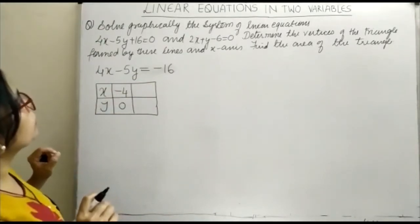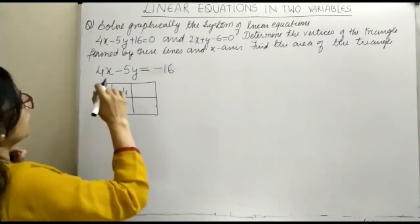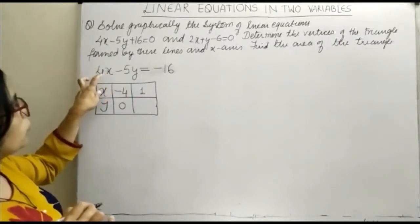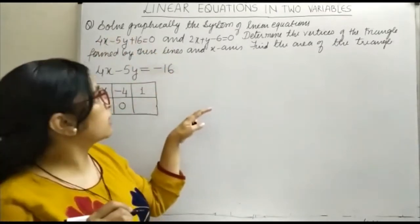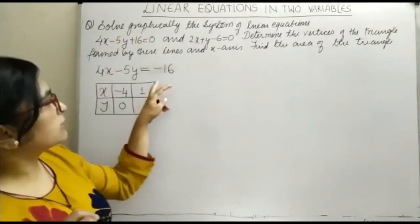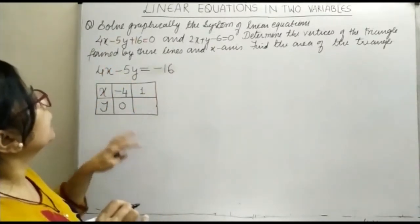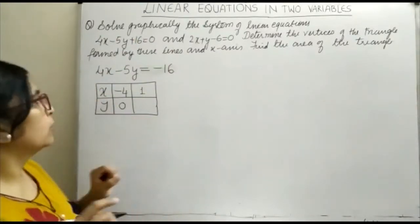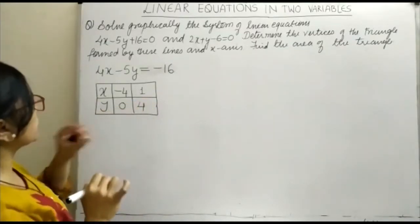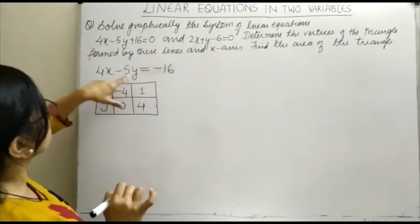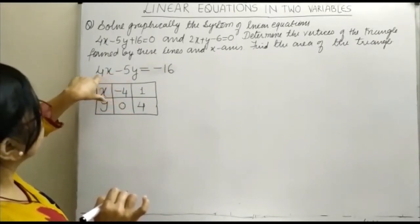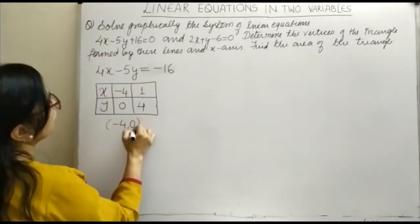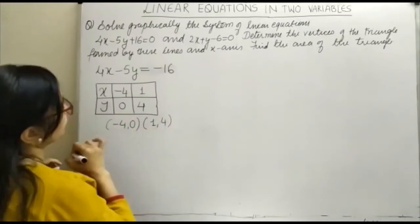So what I will do is take a different value. If I take x as 1, this becomes 4. When this 4 comes to the right hand side it becomes minus 4, and minus 16 minus 4 is minus 20. So minus 20 divided by minus 5 will give you 4. You can check it - keep x equals 1 and y equals 4, so minus 20 plus 16 is minus 16. We got two coordinates: minus 4, 0 and 1, 4.